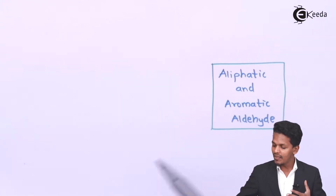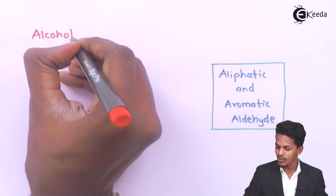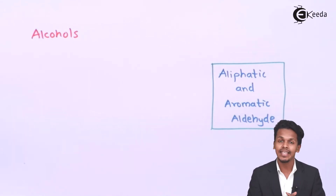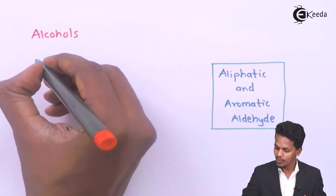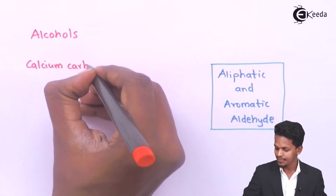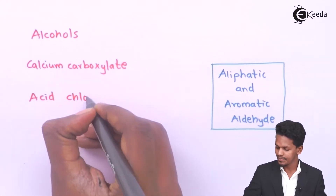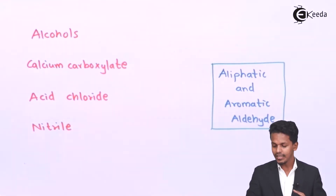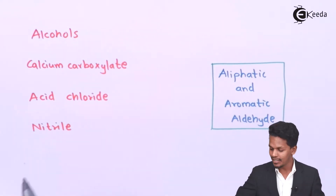Aliphatic as well as aromatic aldehydes can be prepared from alcohols — by using alcohols and carrying out oxidation, we can prepare either aliphatic or aromatic aldehydes. The next method is from calcium carboxylates, then from acid chlorides, and also from nitriles.